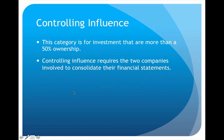Anytime I own more than 50 percent, that puts me into the final category: controlling influence. To control a company, I only need 51 percent of the stock. As a result, the two companies are now considered one company, so what used to be two separate companies with two separate sets of financial statements must now have their statements consolidated into one. I don't do simple journal entries — instead I must blend the two companies completely into a single entity.